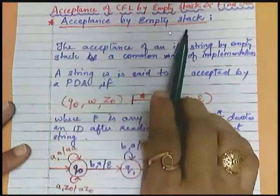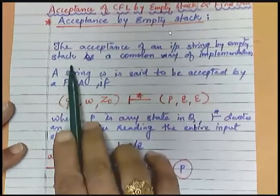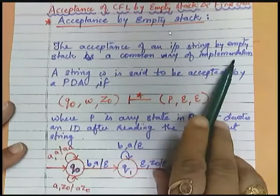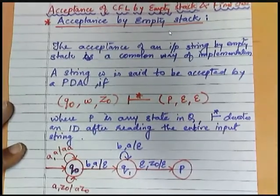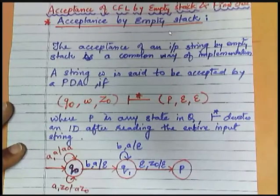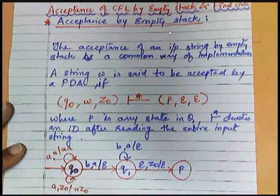The acceptance of an input string by empty stack is a common way of implementation. That's why we have used it in all earlier problems. We are always checking whether the stack is empty after reading the whole string. If stack is empty, we say it is acceptance. If the stack is not empty, then it is not acceptable.